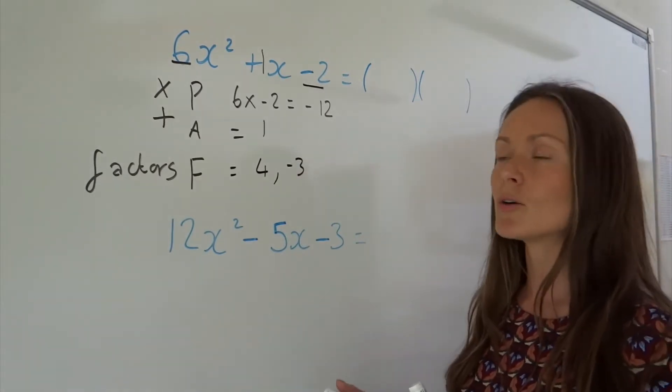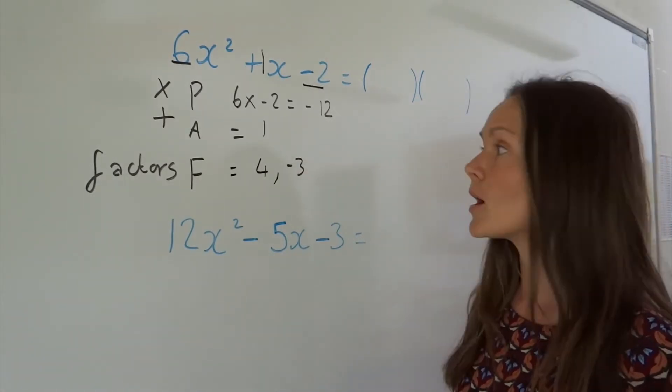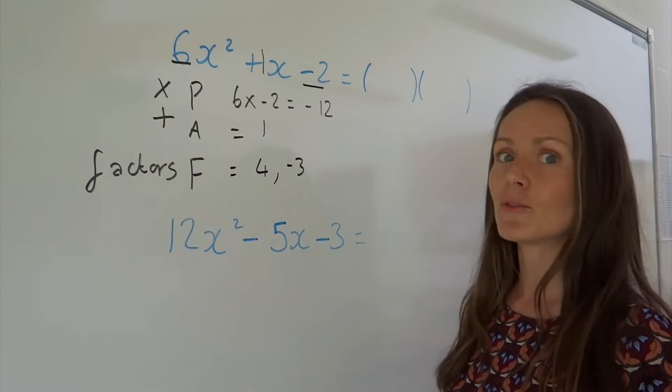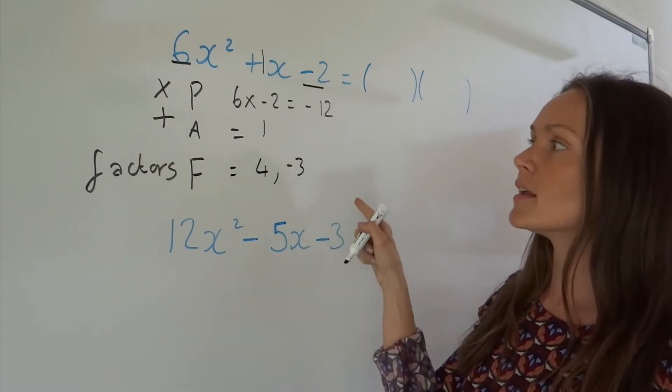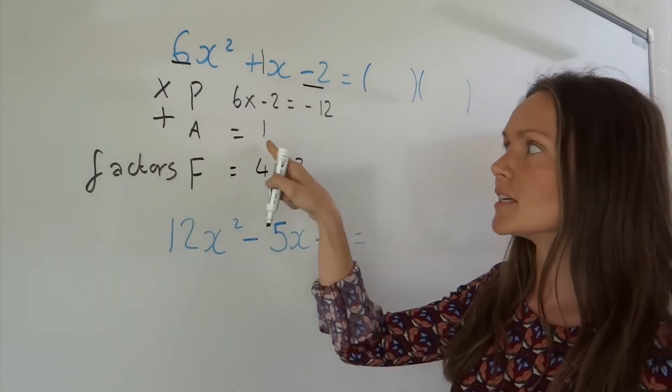You might not be able to come up with these straight away, so if you're struggling to find the factors, you could always start writing out the factors of negative 12. So 1 times minus 12, minus 1 times 12, 3 times negative 4, and so on. And then you just experiment and work out which ones add to give 1.